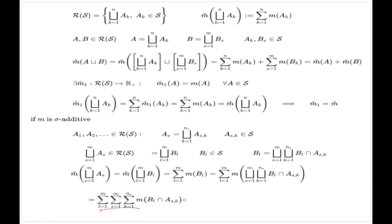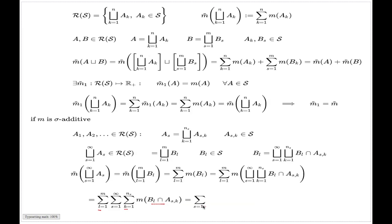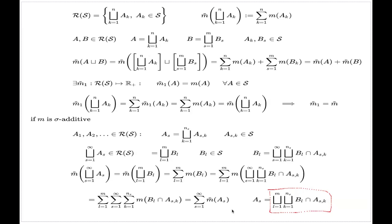The resulting triple sum can be rearranged — the sigma symbols can be placed in any order. Keeping S as the outermost summation, the inner finite sum over K and L gives the original measure M of the intersections, which can be abbreviated using M-tilde of a finite disjoint union over K and L. Using the set identity that this disjoint union is in fact equal to AS, the sum becomes M-tilde of AS summed over S — and the proof is finished.